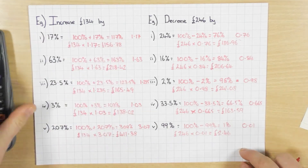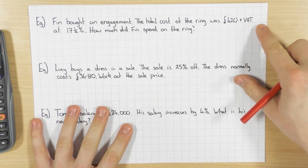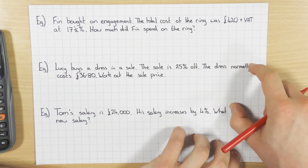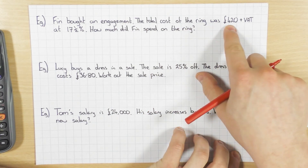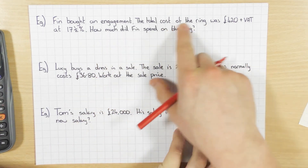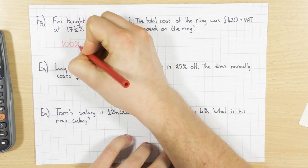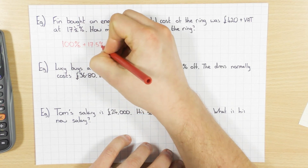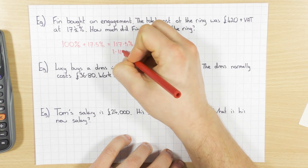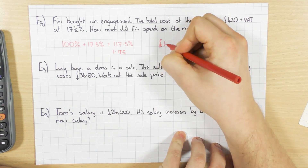So there are some examples using the calculator. And last but not least, let's have a look at some wordy questions to finish off — don't worry, there's only three. If you want to do these first and then check you've got the same answer as me, probably a good idea. So Finn bought an engagement ring. The total cost of the ring was £420 plus VAT at 17.5%. How much did he spend on the ring? This is an increase of 17.5%, so let's work out the multiplier.